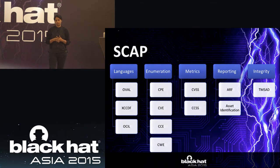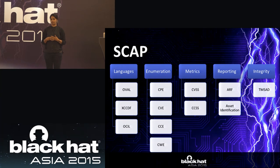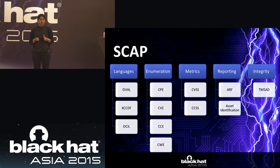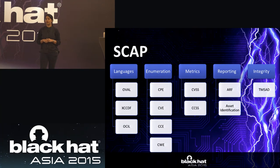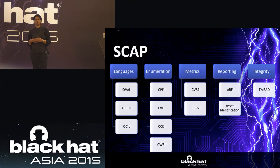For metrics, we have CVSS — the Common Vulnerability Severity Score — based on access and impact factors like integrity impact and confidentiality impact. CCSS is the Configuration Severity Score, which varies by organization. For reporting, we have Asset Reporting Format and Asset Identification. Integrity is a trust model where digital signatures are added to ensure content integrity is maintained. That's SCAP in a nutshell.